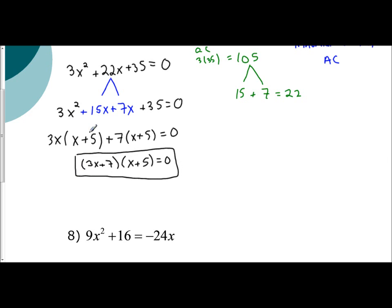Now, in order to solve, remember, you set each factor equal to 0. So I'm going to take 3x plus 7, I'm going to set it equal to 0, subtract 7, and divide by 3.